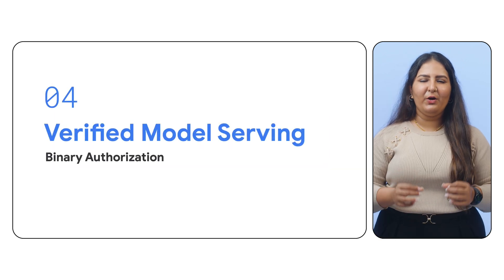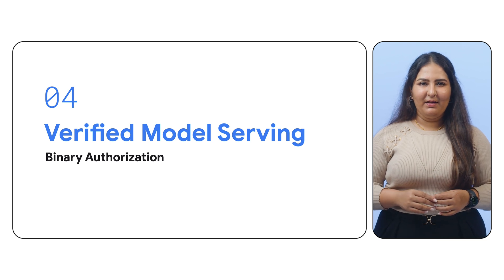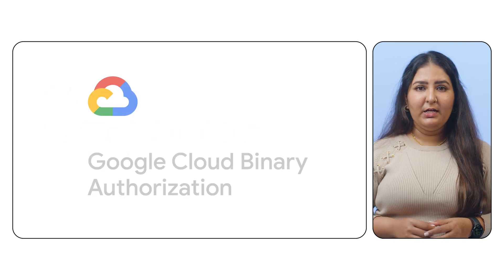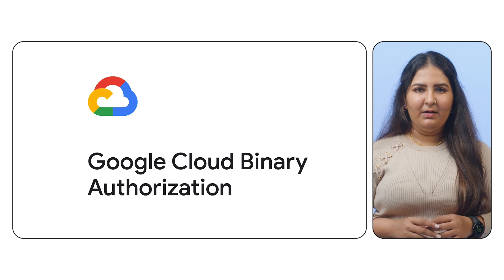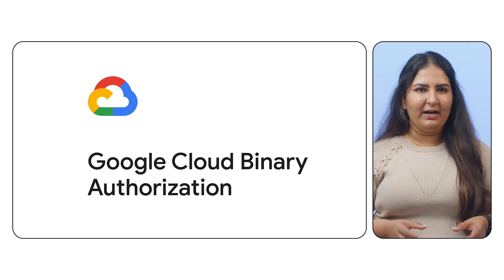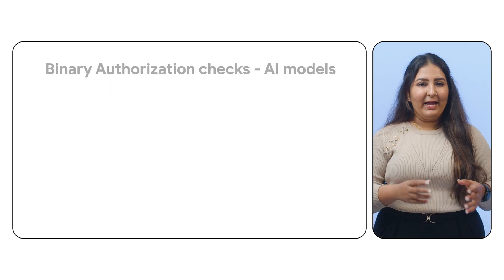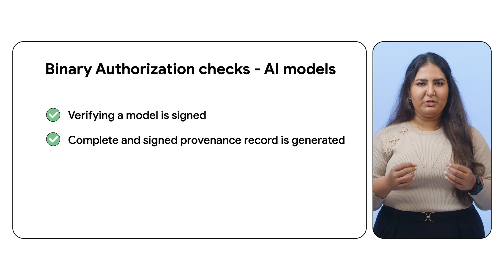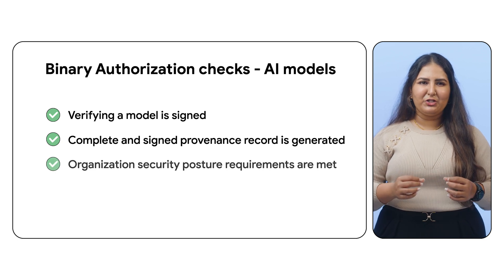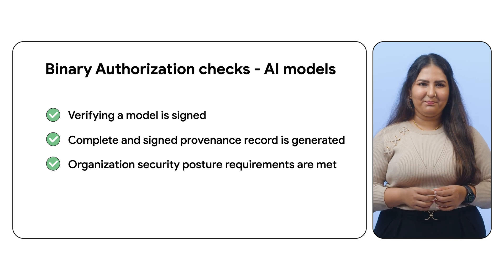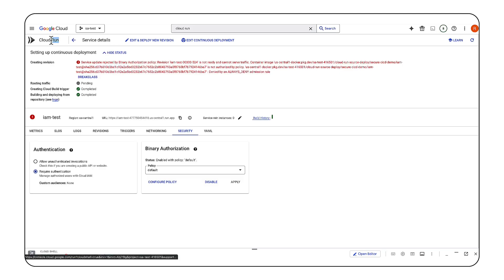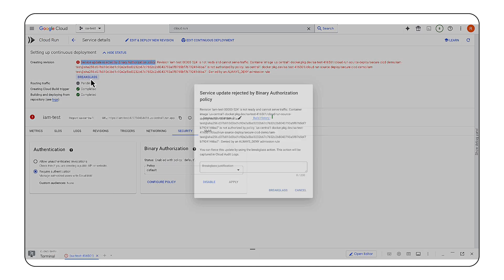The final step in securing your AI development pipeline is robust model validation. Before serving a model, a verification tool should ensure that only authorized and validated models reach production. To achieve this, Google Cloud provides a powerful tool called Binary Authorization. It's a security control tool that can block deployments of a binary artifact if it doesn't pass the defined checks. For AI models, these checks could be verifying the model has been signed, a complete and signed provenance record has been generated for both data and models, or ensuring the organization's security posture requirements are met. Implementing these checks is simple: define your YAML rules, integrate them into your AI development build pipeline, and Binary Authorization takes care of the rest. Make this your final verification step before serving your AI models.